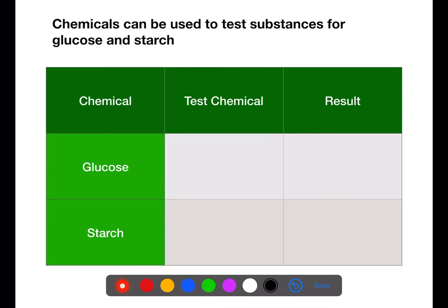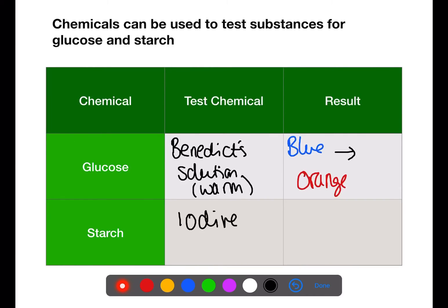So we have the two chemical tests for glucose and for starch. The first for glucose is to test with Benedict's solution. This needs to be warm. A positive result for glucose is that the blue Benedict's solution will turn an orange colour. Starch is tested with iodine solution and you can just drop the iodine onto the substance and it will change colour if starch is present. And it will change from a red-brown to a deep blue-black as a positive test for starch.